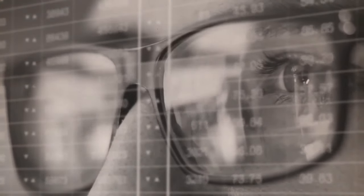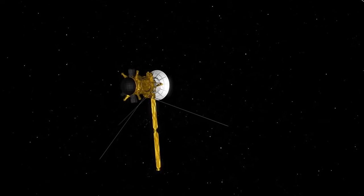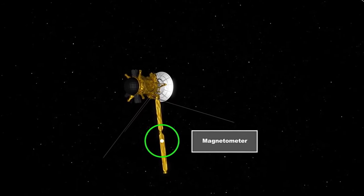But interestingly, Saturn's rings weren't always known to us. Galileo, nearly four centuries ago, observed the elongated bulges around Saturn, which we now recognize as its magnificent rings. However, he couldn't discern their intricate details, mistaking them for celestial bodies on either side of the planet.